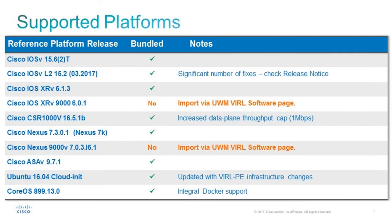We also include CSR1000v 16.5.1. Many users have run into this issue: in CSR1000v 16.4 and earlier, the images bundled with VIRL don't require an additional license, but because of that they have bandwidth caps. Those bandwidth caps used to be very small — on certain topologies, even protocol feature traffic would overwhelm the bandwidth limit, causing neighbors to drop or the network to not converge. In 16.5.1, the bandwidth cap has been updated to one megabit per second, which should fix those issues.